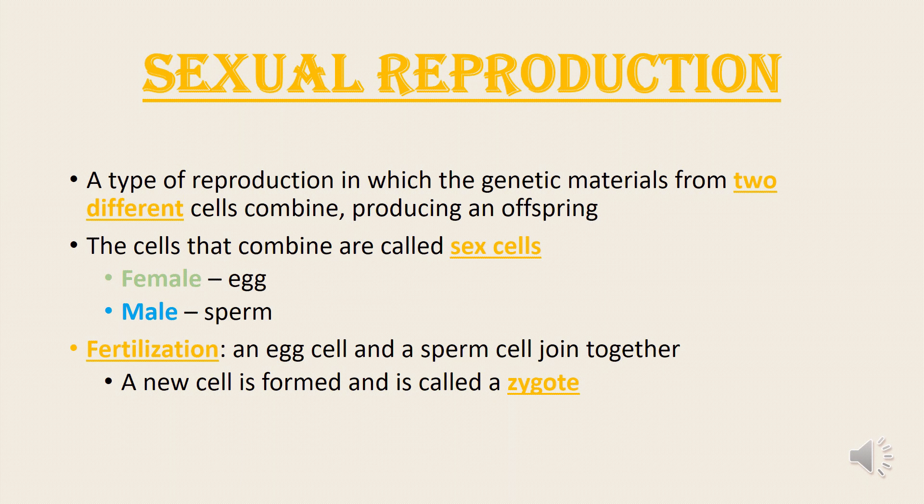In fertilization, an egg cell and a sperm cell join together. A new cell is formed and is called a zygote.